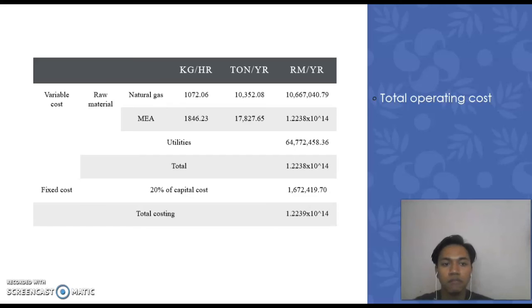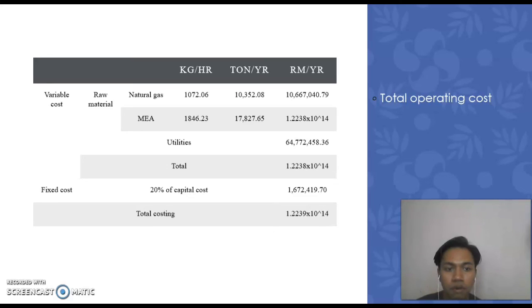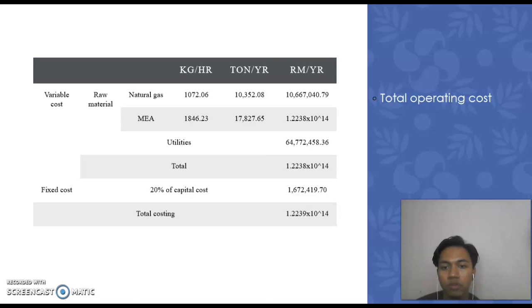Variable cost consists of raw material cost and utilities, which is the electricity power used for our plant. The cost for utilities is RM64,772,458. Fixed cost is 20% of our capital cost, which amounts to RM1,672,419. If we total the variable and fixed costs, we will consume approximately RM1.2239 multiplied by 10^14 per year.